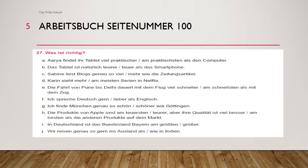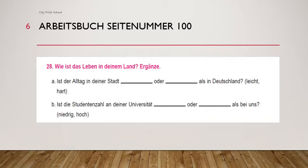Now let's go to the next exercise. Aufgabe achtundzwanzig on the same page. Wie ist das Leben in deiner Stadt? In this exercise all sentences are given with ALS only. Since the sentences are given with ALS, automatically all answers will be in comparative. So let's solve the first two or three sentences.